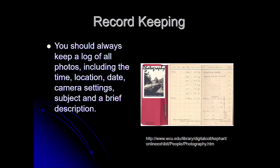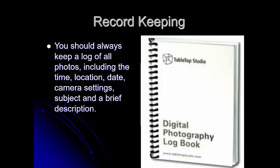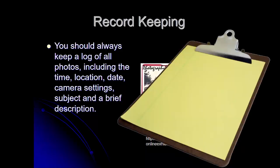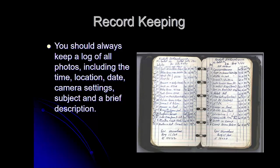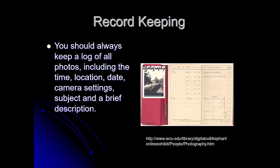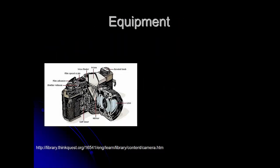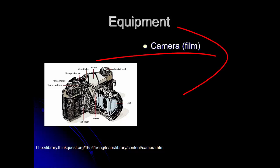When you're taking photos at a crime scene, record-keeping is absolutely crucial. You need to keep a log. This log can be a book, some pieces of paper on a clipboard, or a binder — it doesn't matter. You just need somewhere to create a list of all the photos taken, because eventually they're all going to start to look the same. That list should include the time the photo was taken, the location, the date, any special camera settings or filters used, the subject, and a brief description.